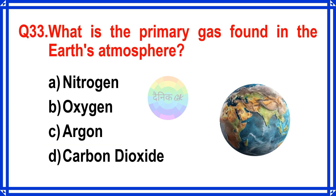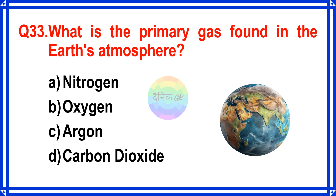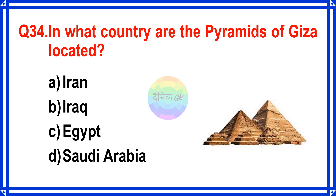What is the primary gas found in the earth's atmosphere? The correct answer is Option A. Nitrogen.